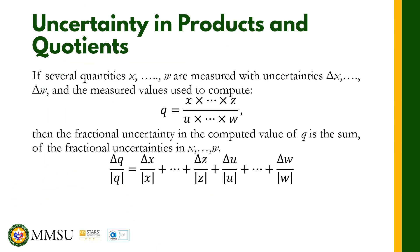Another rule is for uncertainty in products and quotients. This rule is applicable for formulas containing multiplication or division. For example, Q equals X times Z, or Q equals X divided by Z. The mean value of Q in the multiplication case is the mean value of X multiplied by the mean value of Z, and in the division case it is the mean value of X divided by the mean value of Z.